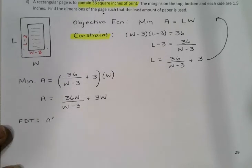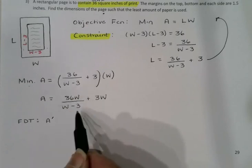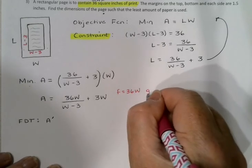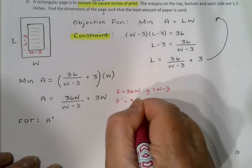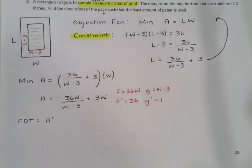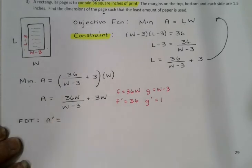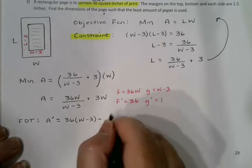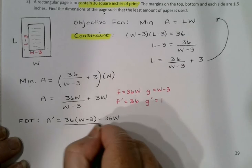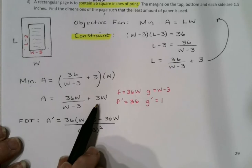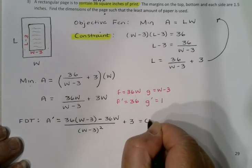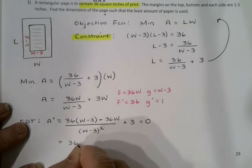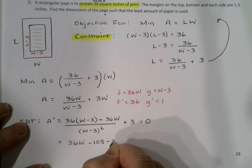So I need to find A'. Looks like we're going to need a quick little quotient rule right here. F would be 36W/(W - 3). F would be 36W and G would be W - 3, so F' = 36 and G' = 1. And I will get GF' minus FG' over G², which is 36(W - 3) - 36W over (W - 3)².